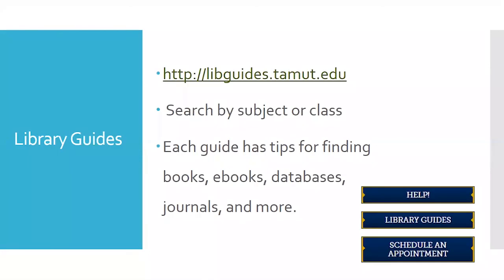On the Library Guides page — LibGuides for short — there's a collection of pages we've made for specific classes or subjects, with over 77 guides currently. If you search for a topic like education, each guide has information on how to find books, ebooks, databases, and journals about that specific field. It's a great place to start a project.